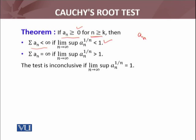If the limit superior is greater than 1, we will say that series diverges. If limit superior equals 1, then the test is inconclusive. We can't say anything. The series may diverge or may converge.